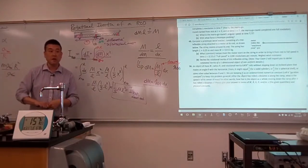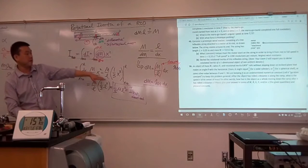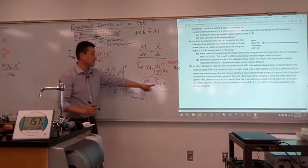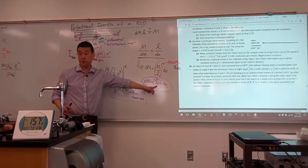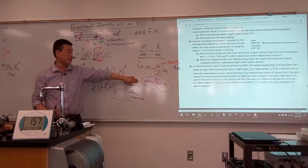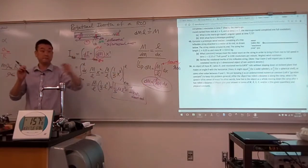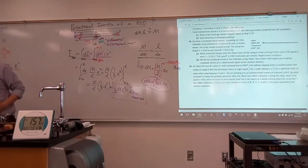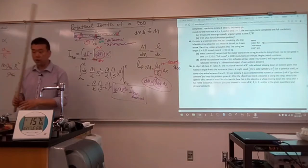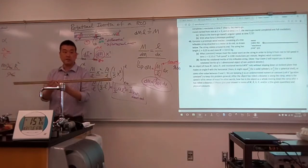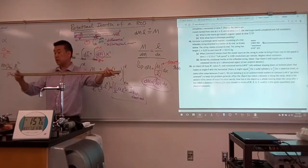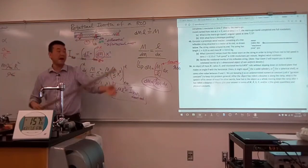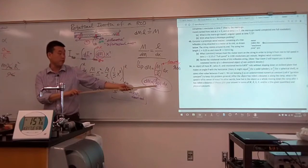What I would ask you to keep in mind is: be able to do this if the question is changed so that the density of the rod is no longer uniform. Be able to deal with something that has a variable density — for example, if I said this ruler is made so that one end is lighter than the other. On a problem, I would give you the functional form of the density.